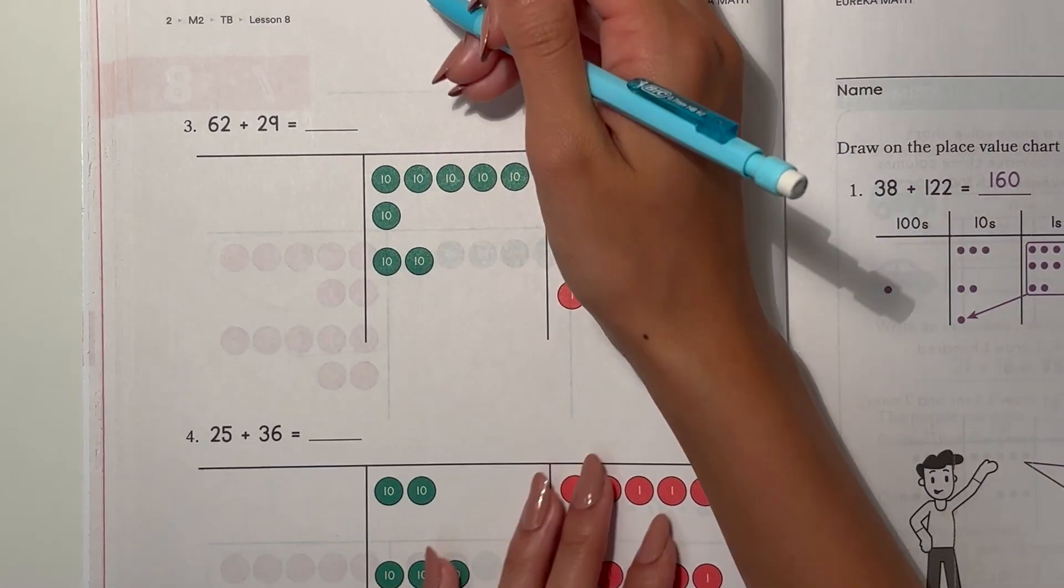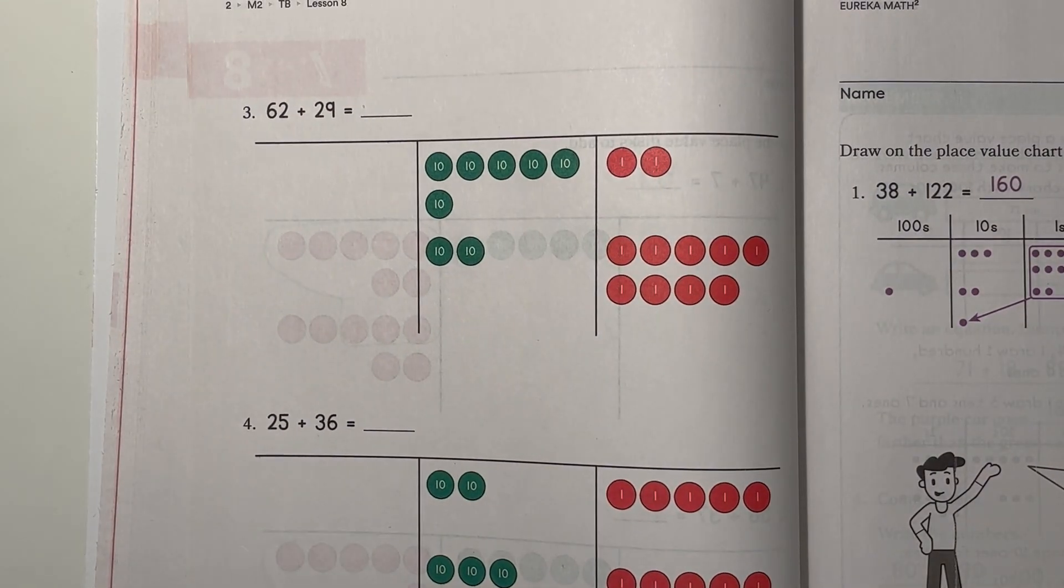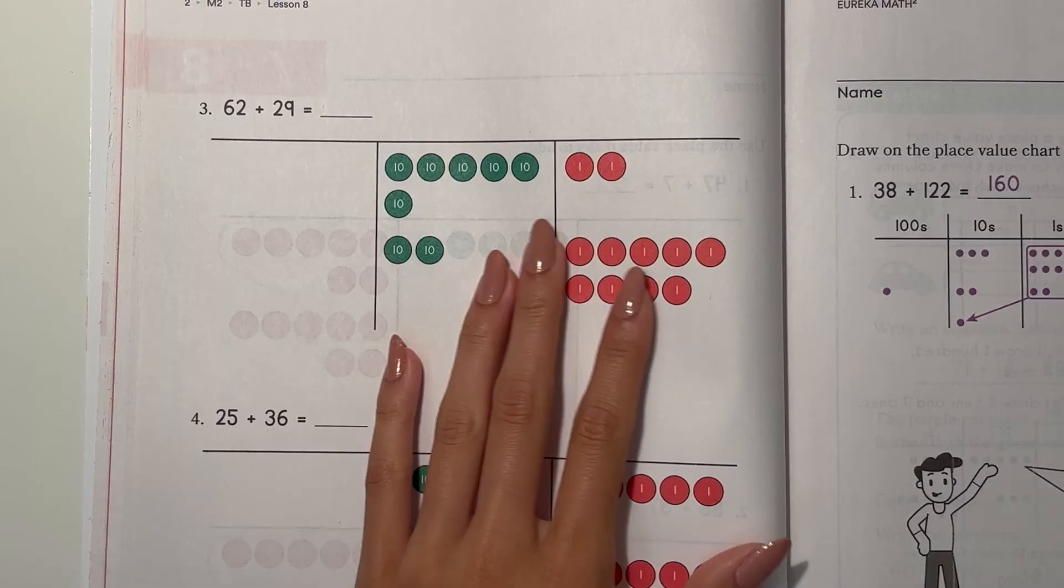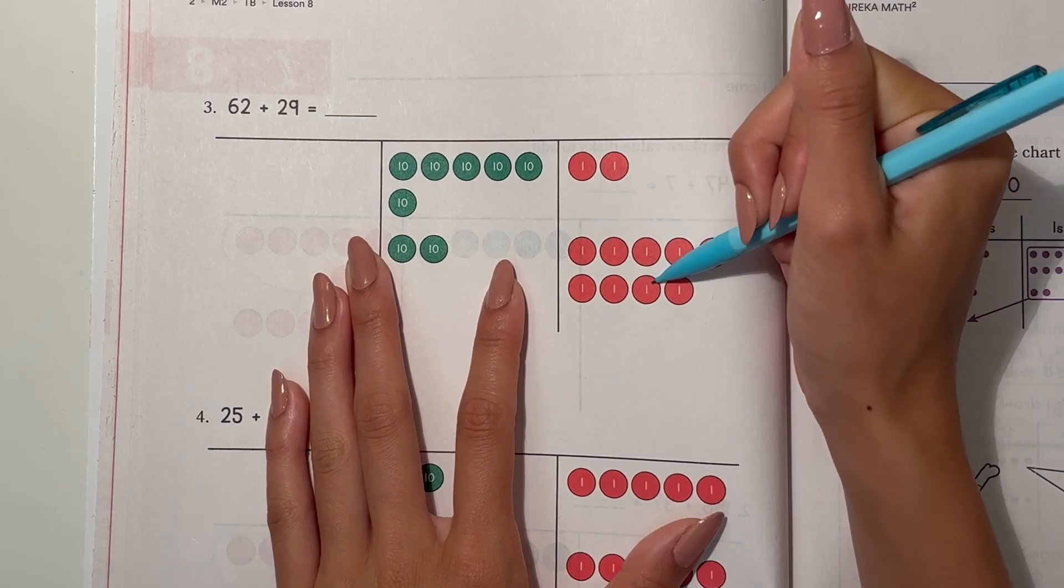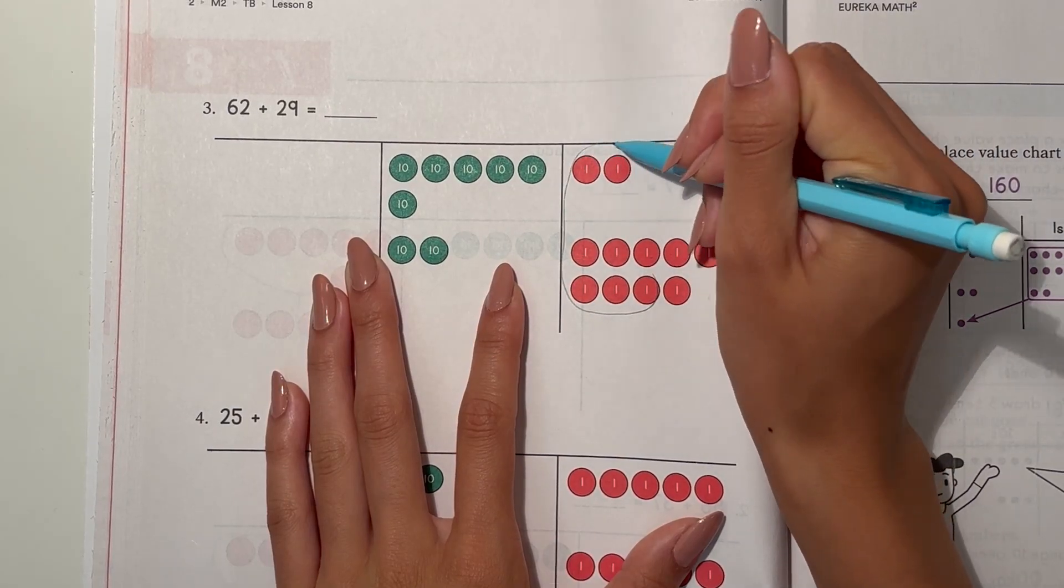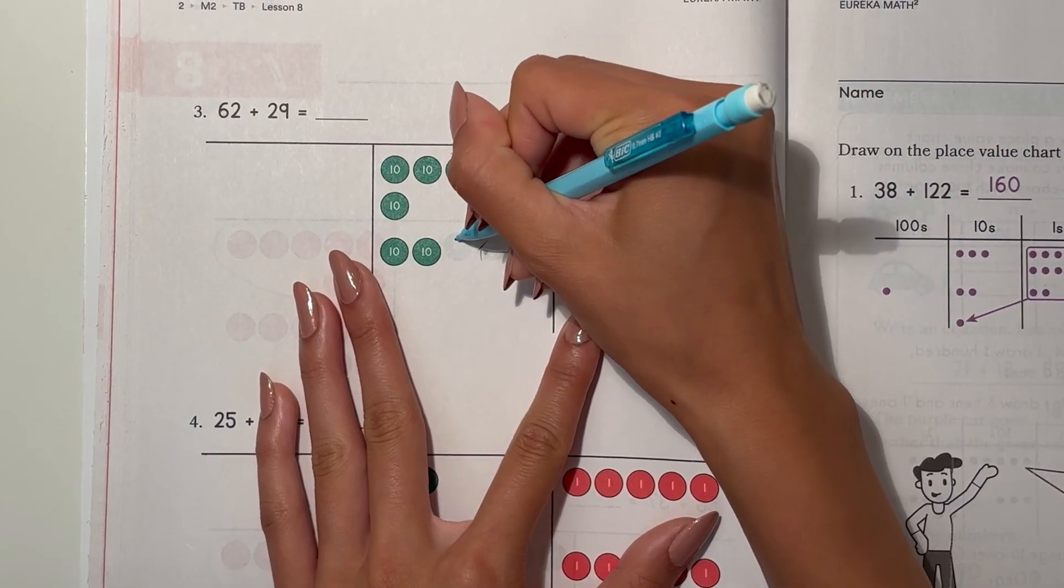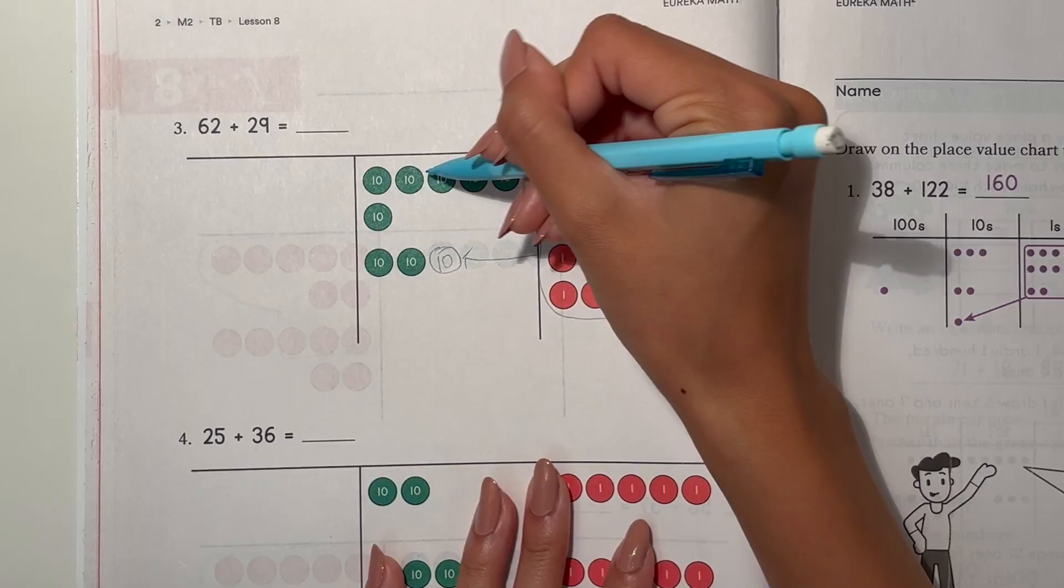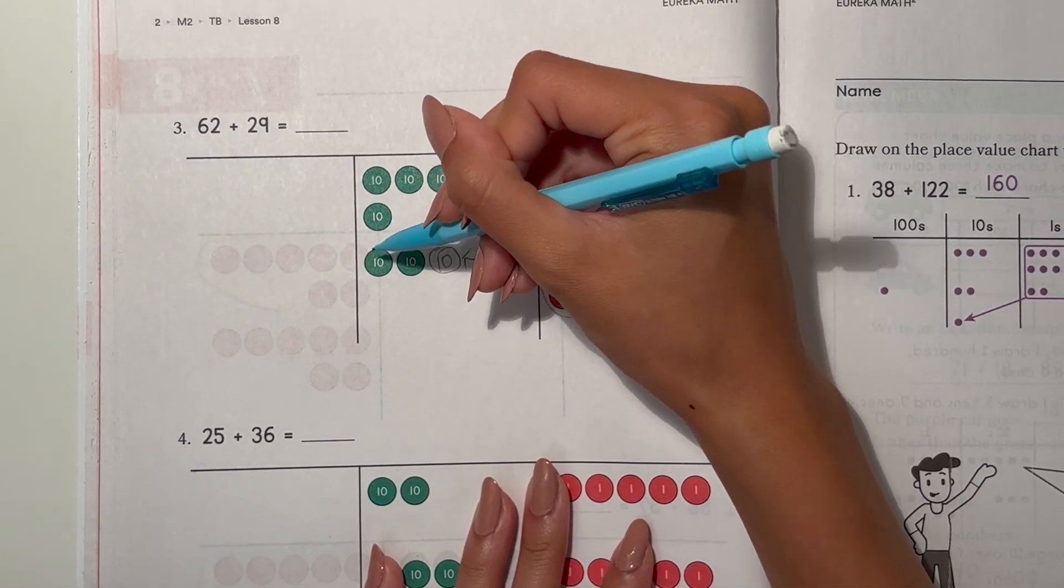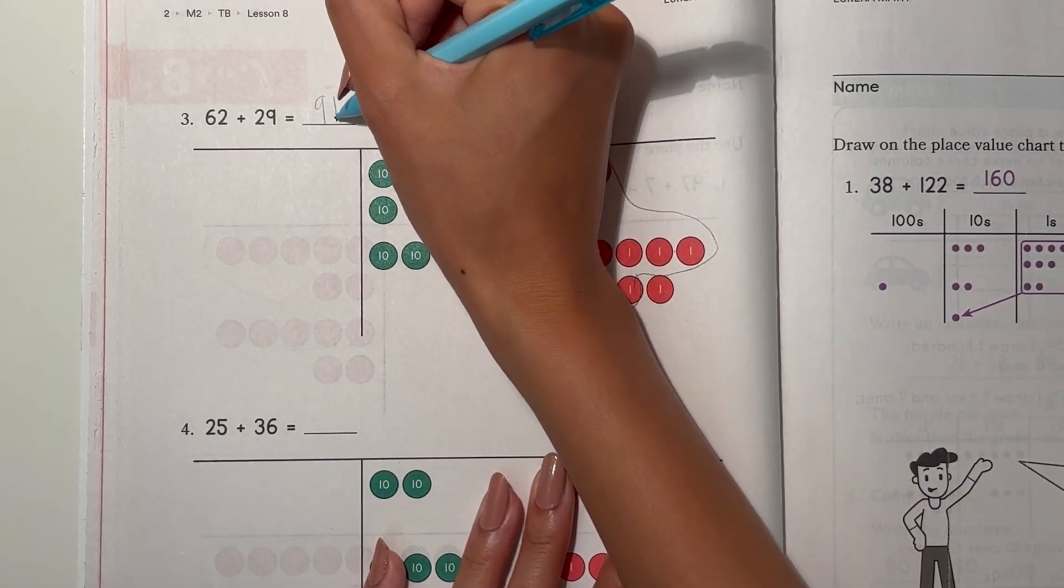Okay, number 3, 62 plus 29. So we have 62 and then 29. 1, 2, 3, 4, 5, 6, 7, 8, 9, 10. So this regroups and becomes 1 ten. So now we have 1, 2, 3, 4, 5, 6, 7, 8, 9. We have 9 tens and 1 one. So 91.